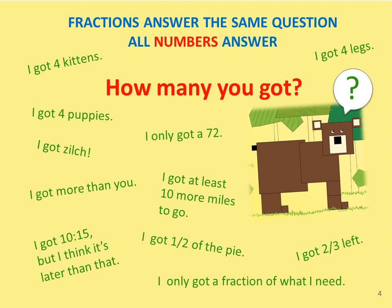A fraction is a number. As numbers, fractions answer the same question all numbers answer: how many you got? Children should realize that a number is an adjective — number only states quantity. I got a hundred on the test. I got ten miles to go. Number doesn't tell us what, only how much or how many. I may have four monkeys or four pennies; I still have four. I could have one half of a large pizza or one half of a small one; I still have one half.